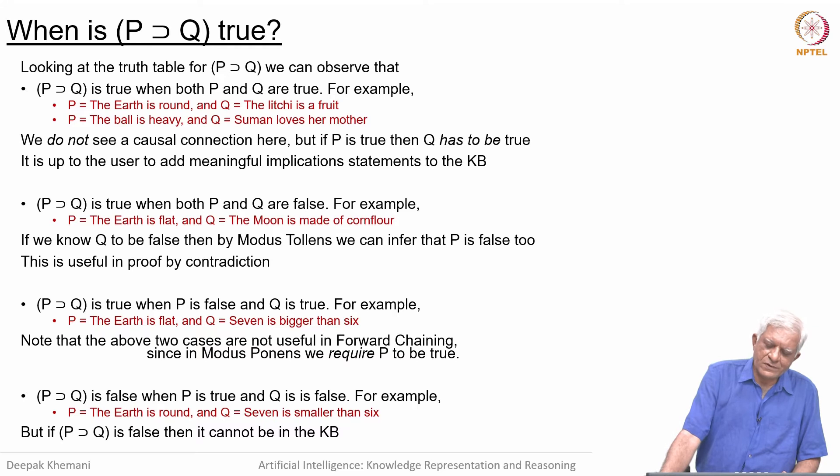Lastly, the fourth row of the implication truth table says P implies Q is false when P is true and Q is false. For example, the earth is round and 7 is smaller than 6. But we are not really interested in this case very much because if P implies Q is false, we would not add it to the knowledge base, because we have said that the knowledge base consists of a set of premises or axioms that is given to you. We are only interested in true statements.